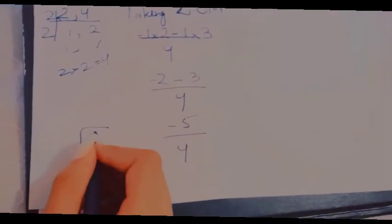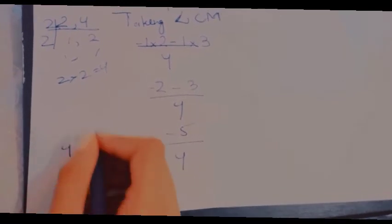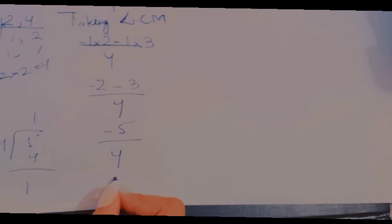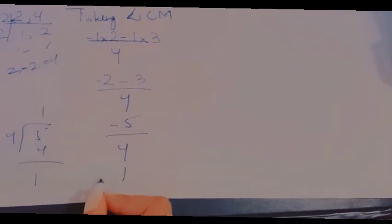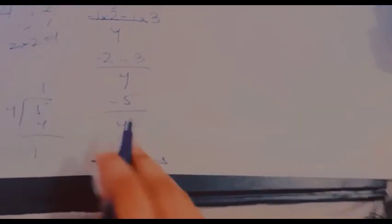Now we're gonna divide it. So write 5 inside and write 4 outside. 4, 1s are 4. 1. So the answer we get is 1 whole 1 by 4. And put a minus with it. So that's the whole answer.